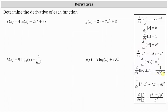Here we're asked to determine the derivative of each function. First, we have f of x equals 4 natural log x minus 2 e to the x plus 5x. The derivative f prime of x is equal to the derivative of 4 natural log x, which is 4 times one divided by x, minus 2 times the derivative of e to the x, which is e to the x, plus the derivative of 5x, which is 5 times 1. Simplifying, we have f prime of x equals 4 divided by x minus 2 e to the x plus 5.